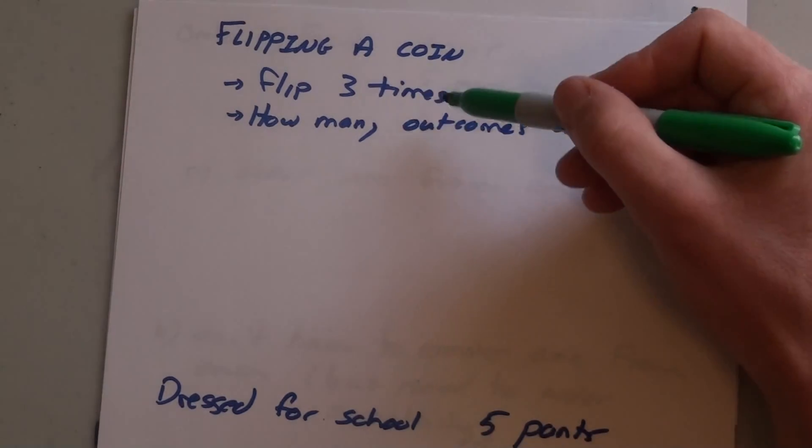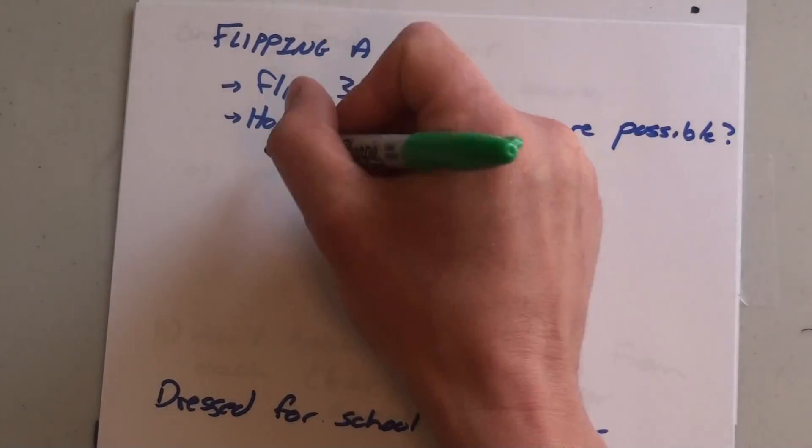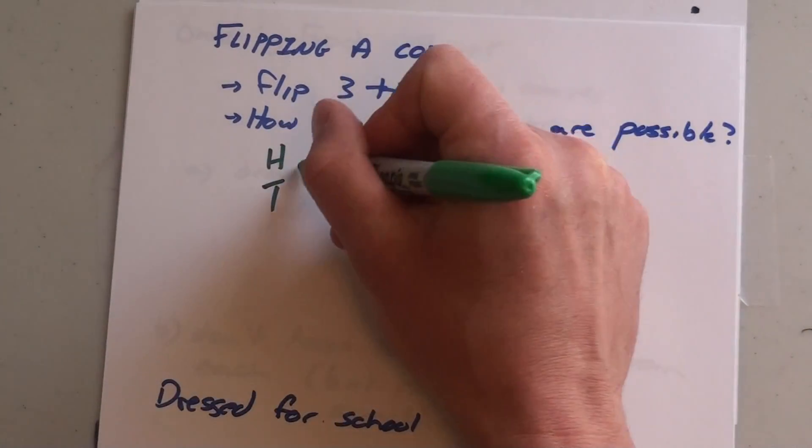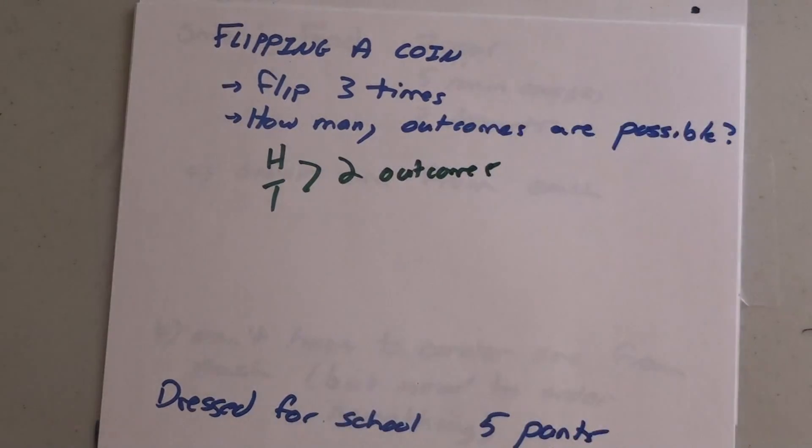Let's say I'm flipping a coin. I want to flip a coin three different times. How many outcomes are totally possible? When you flip a coin you have two outcomes: you either got heads or you got tails. You have two outcomes in total when you flip the coin one time.